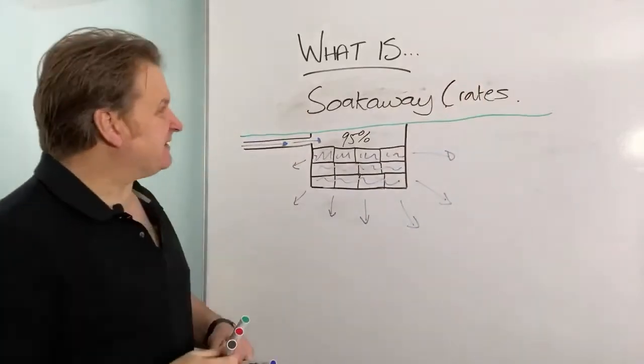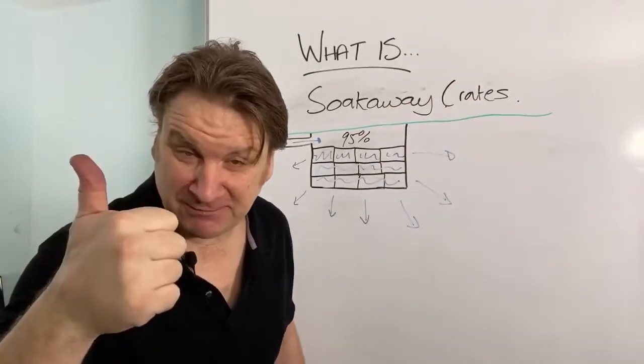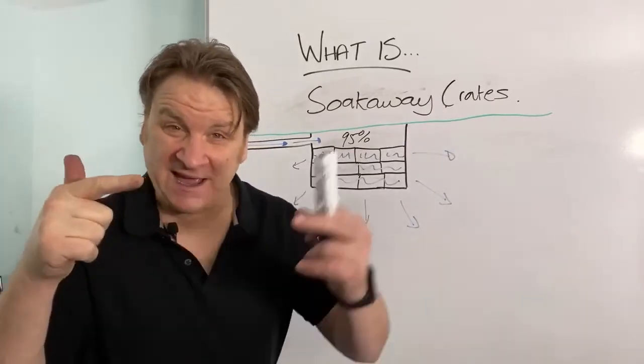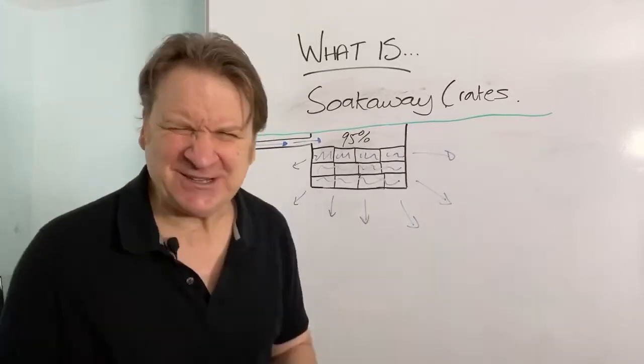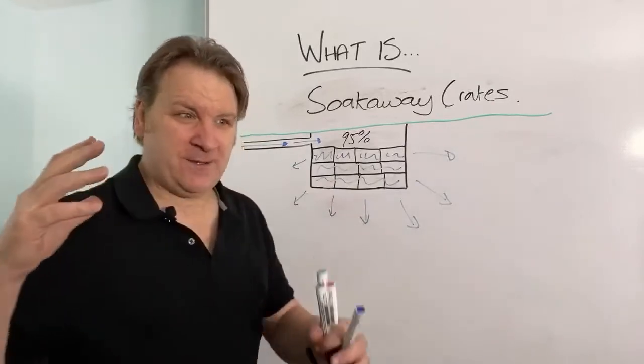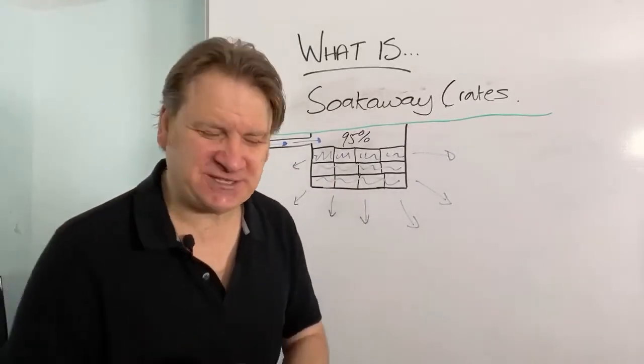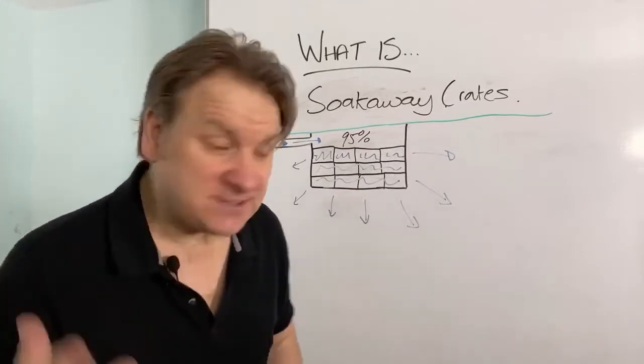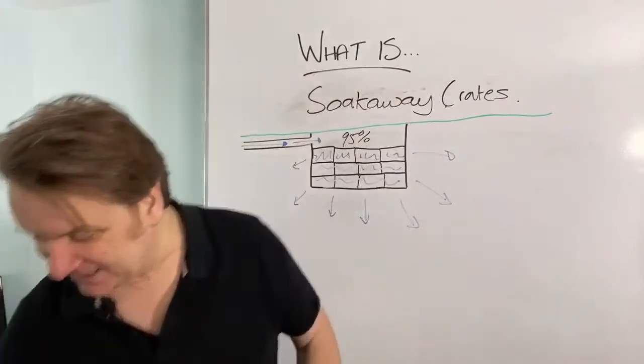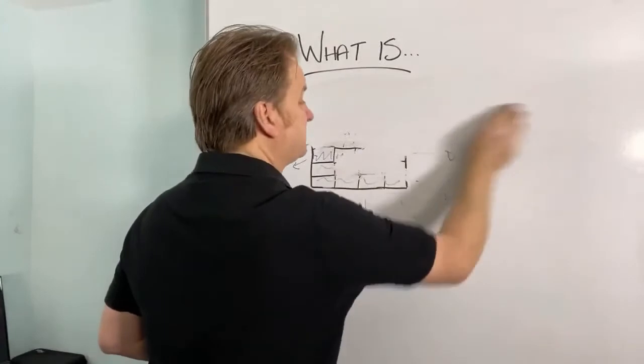So those are basically the different types of sewage systems you can get. You can get a cesspool, remember, it's a sealed unit, you can get a septic tank which has got an inlet and an outlet pipe. We've got a sewage treatment plant that turns all your horrible stinky sewage into clean water. You've got soak away pits, you've got soak away pipes, you've got herringbone systems and you've got soak away crates. So there you go. So that is basically the whole spectrum of off-mains sewage systems.